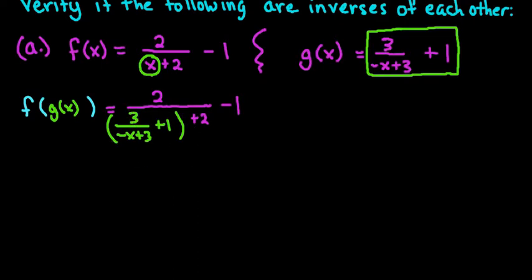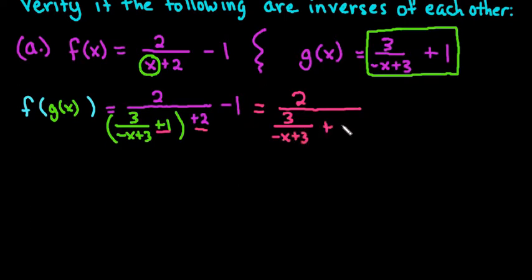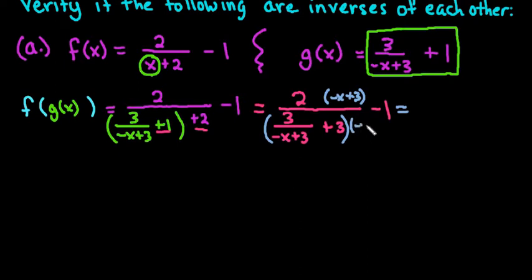This gives us a very ugly fraction and we do have to simplify it. I'm going to start by combining like terms in the denominator. The plus 1 and the plus 2 combine, leaving 3 over negative x plus 3 plus 3 minus 1. Now I have to get rid of the denominator within the denominator. To do that I'm going to multiply the top and the entire denominator by negative x plus 3, which is essentially multiplying by 1 so it doesn't change the value.